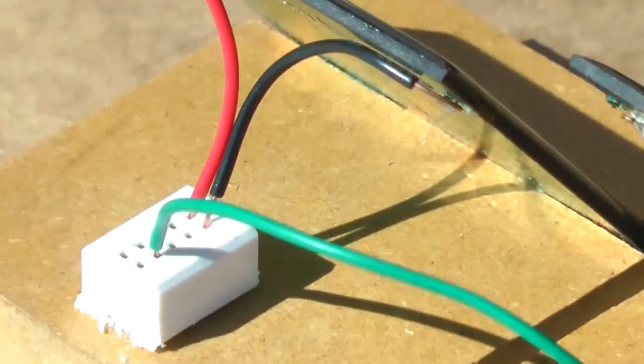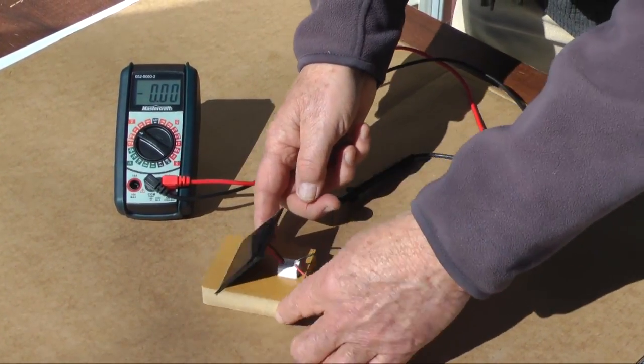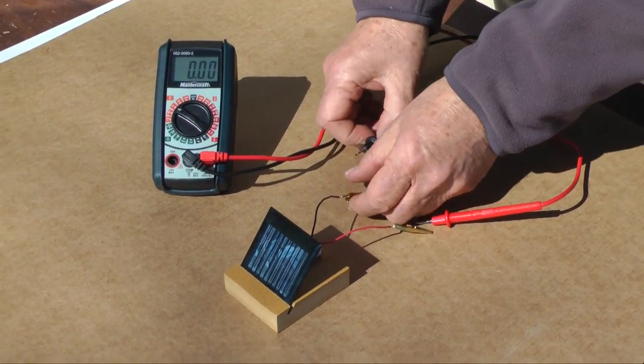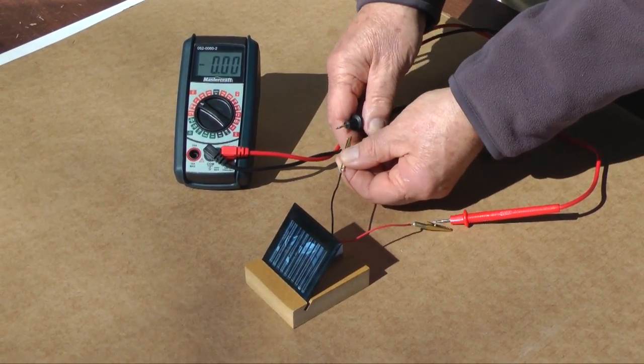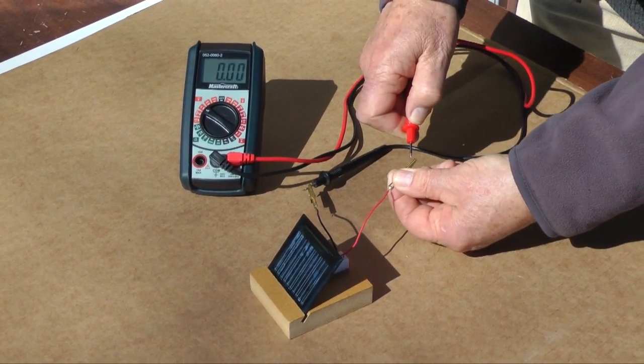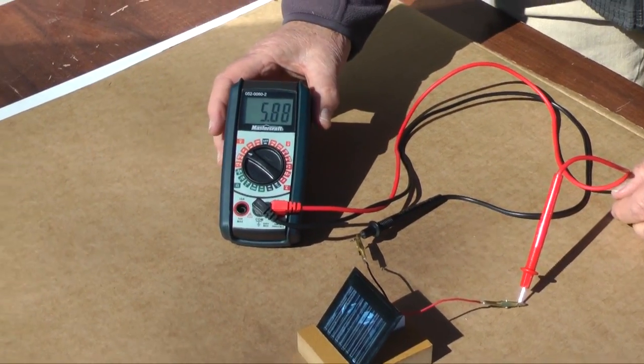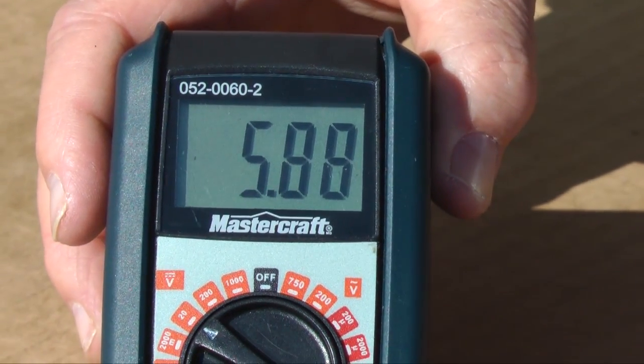Connecting a meter to the panel, we can measure voltage and current. I know this panel can produce up to six volts, so I set my meter range to 20 volts. Alligator clips are convenient for securing the probes during measurement. These panels will produce a reading with ambient room light, but direct sunlight is the best.